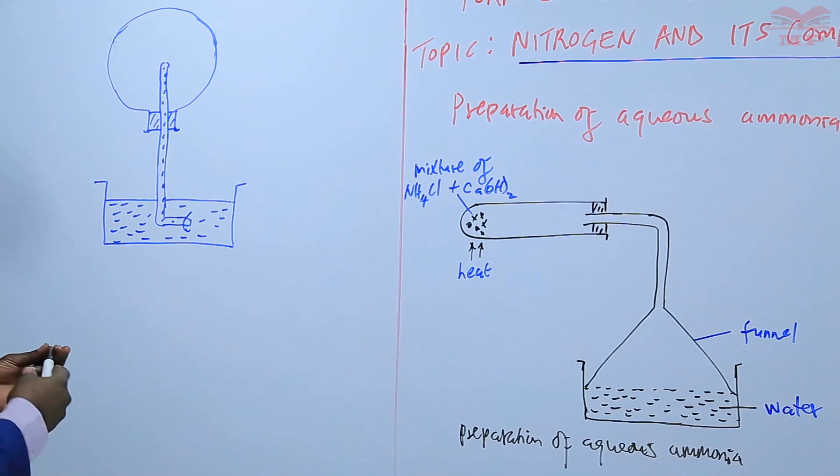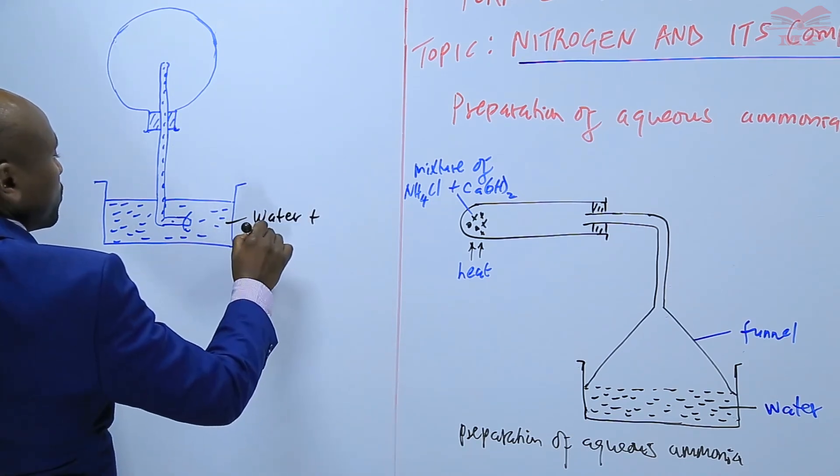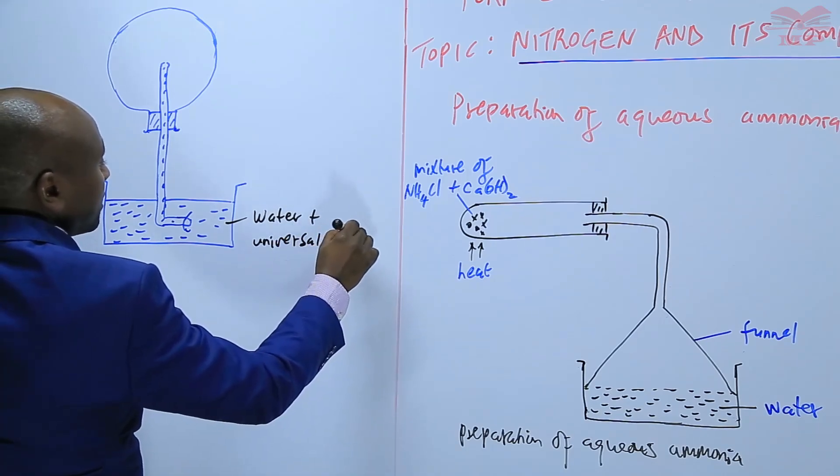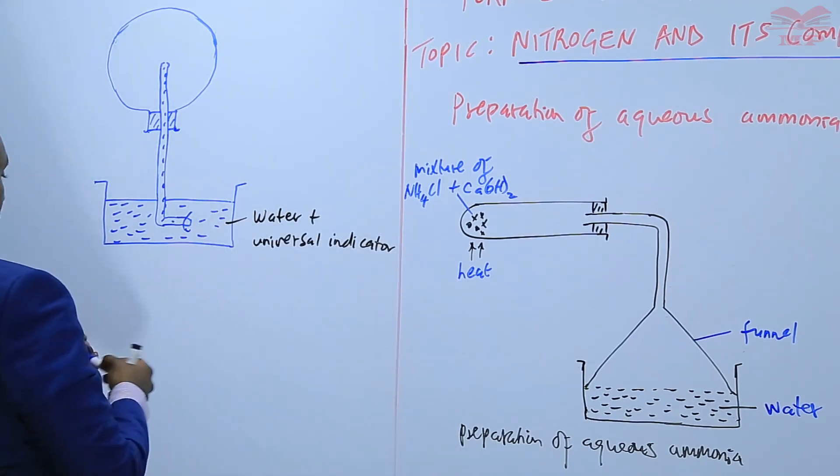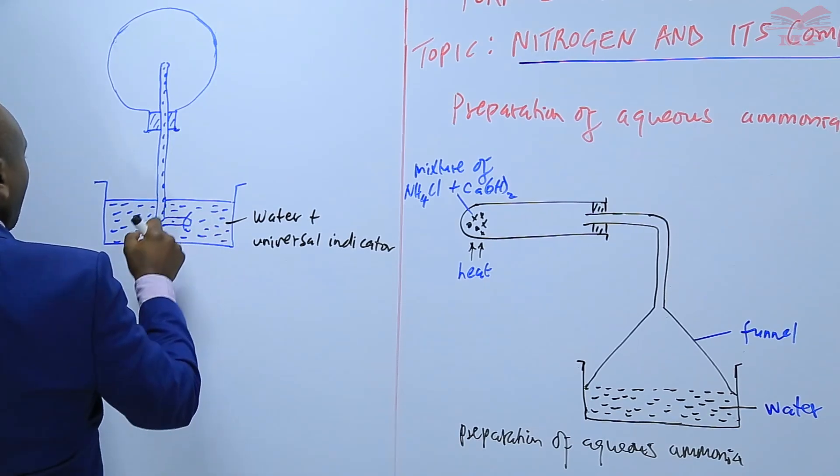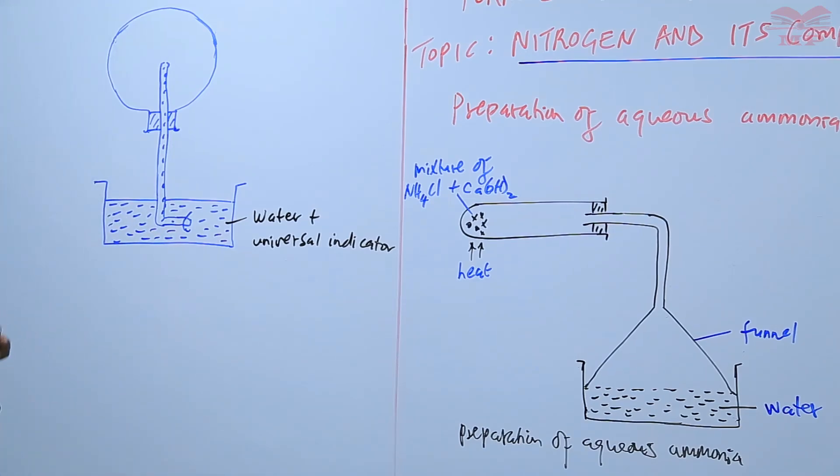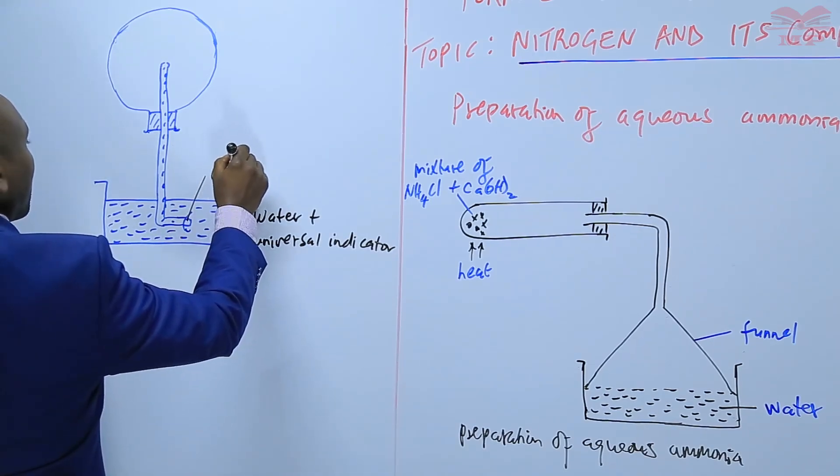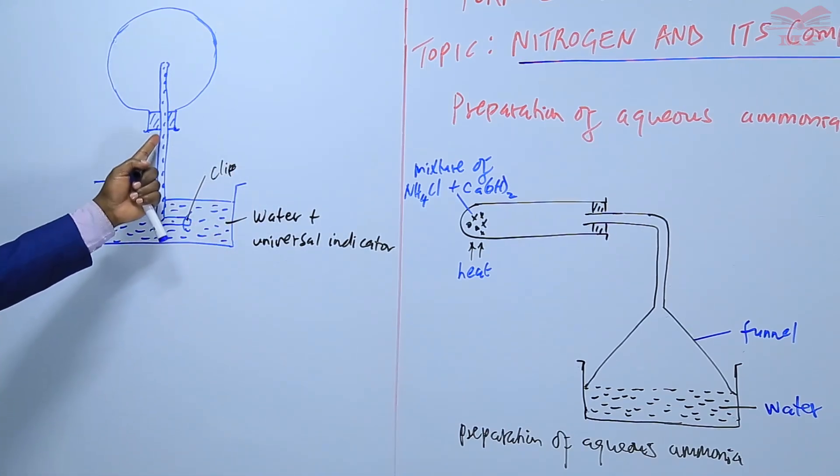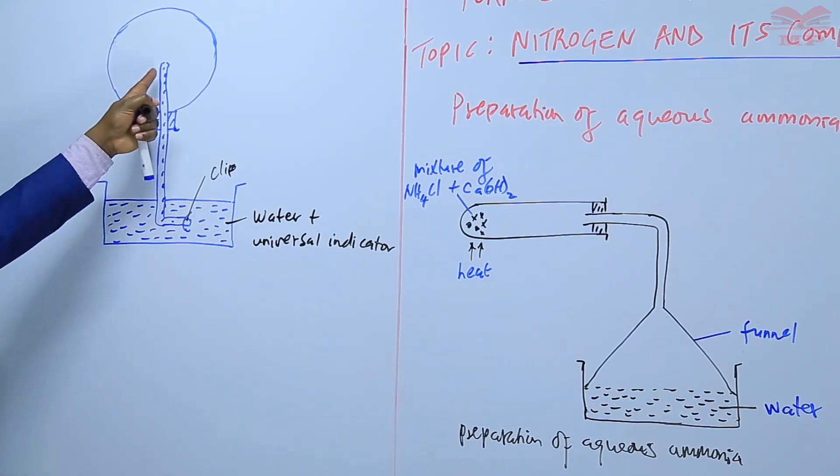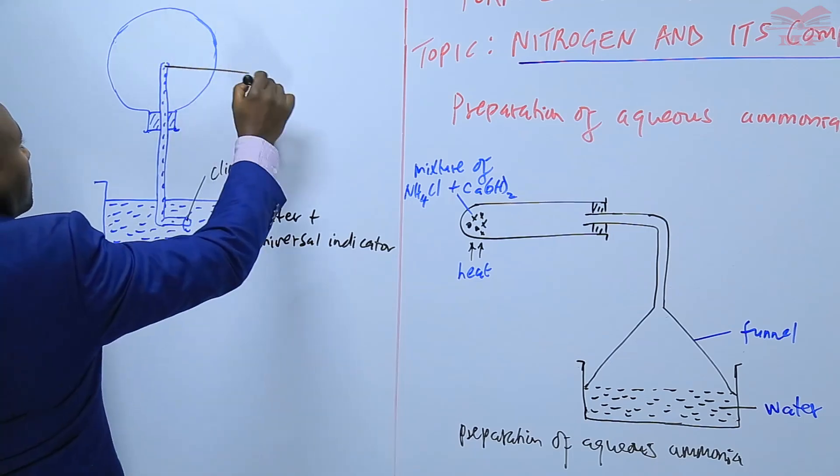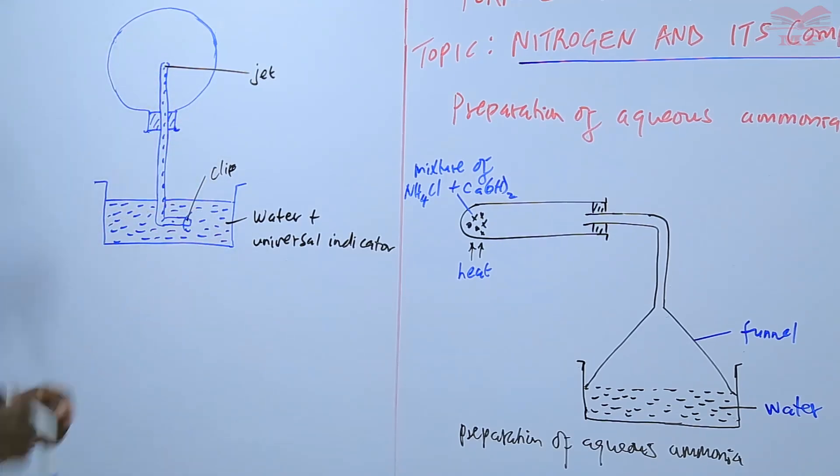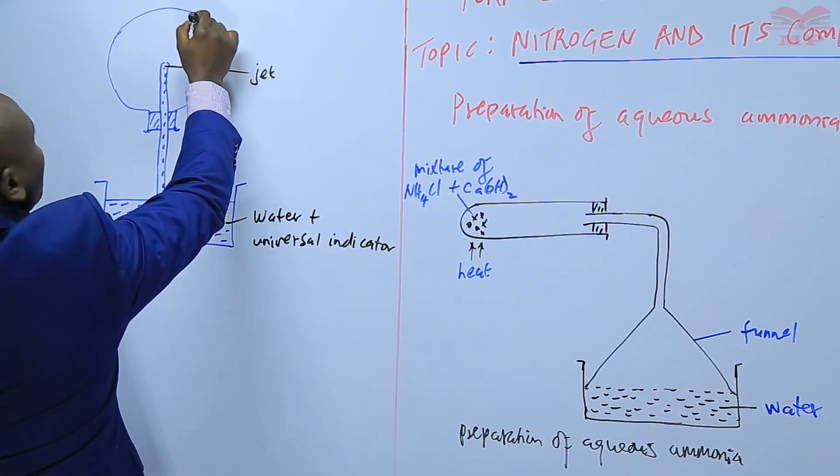So in this experiment we put water plus universal indicator into a trough, and then using the clip we have a clip here we open the clip to allow the water and the universal indicator to enter into this tube up to the jet area. So we have a jet here we have a jet that allows small quantities of water. So up to the time the jet is full and then inside the flask we have ammonia gas.